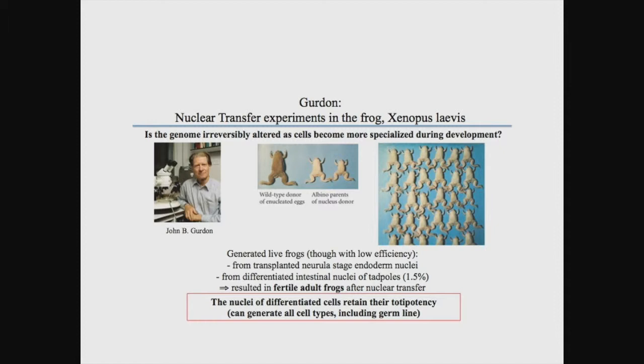The term epigenetic had been created before Gurdon's experiments, which go back to 1962 for the first important one. The creation of this term epigenetic — with a slightly different meaning from the one I have just described — was put forward by Conrad Waddington in 1957.